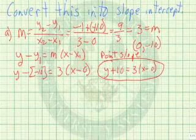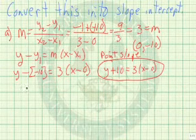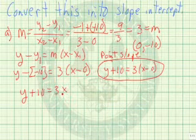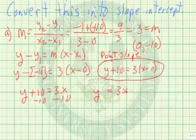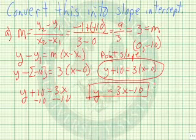Let's convert this, however, into the other form. y plus 10, distribute the 3, so we have 3x. Let's subtract 10 from both sides. So, y equals 3x minus 10. And this will be written in the slope-intercept form.